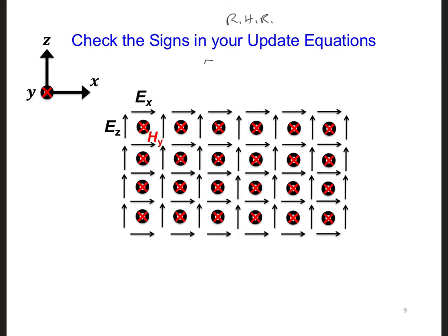That is, for an electric field update, if you point your thumb in the direction of the field component you're updating, say EZ, let's consider an EZ component. If you point your thumb in the direction of EZ, then your fingers should curl around in the direction that we want to sum the magnetic fields.